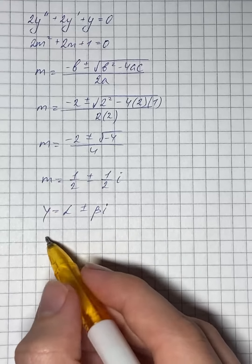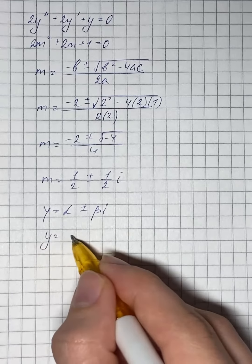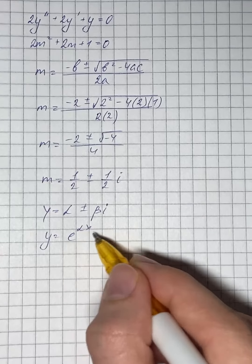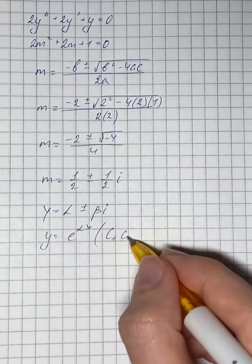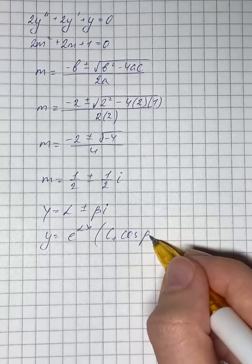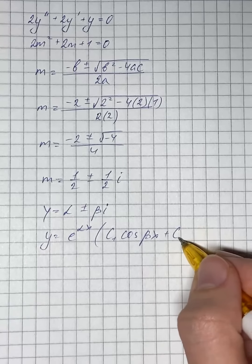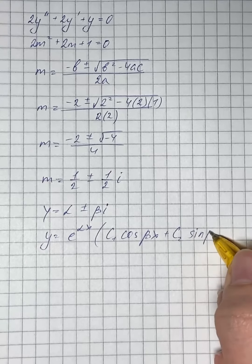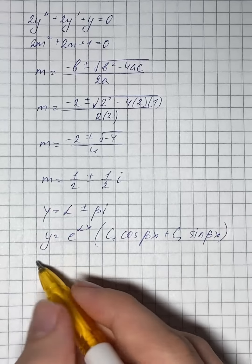then the general solution is of the form e to the power of alpha x times c1 times cosine of beta x plus c2 times sine of beta x.